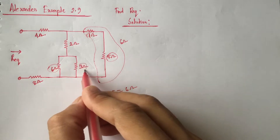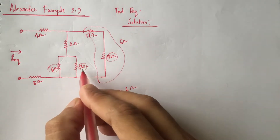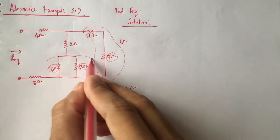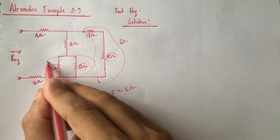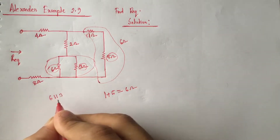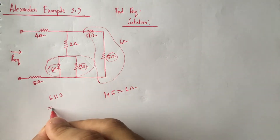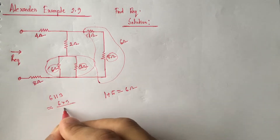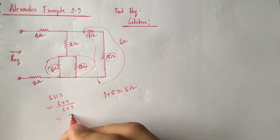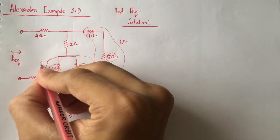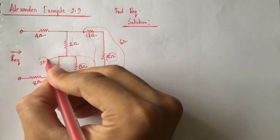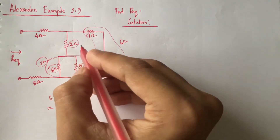Now from this point we see that the 6 ohm resistance and 3 ohm resistance are in parallel. These two parallel resistances can be replaced by an equivalent resistance of 2 ohm.